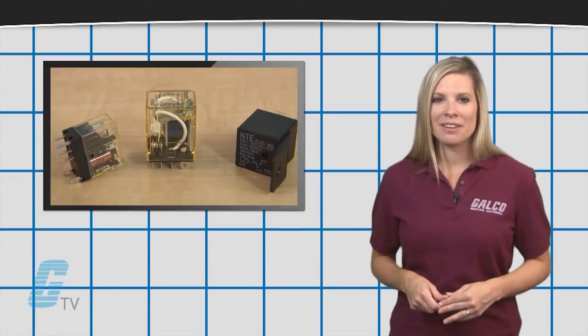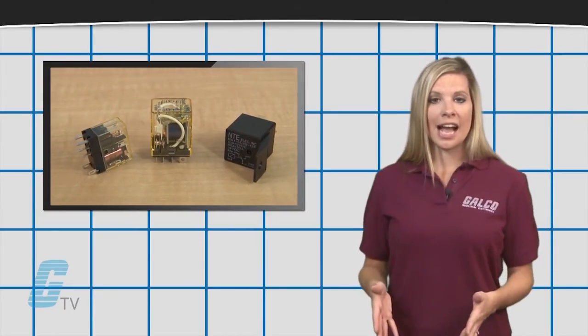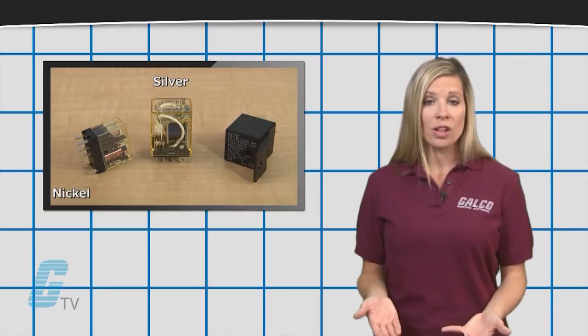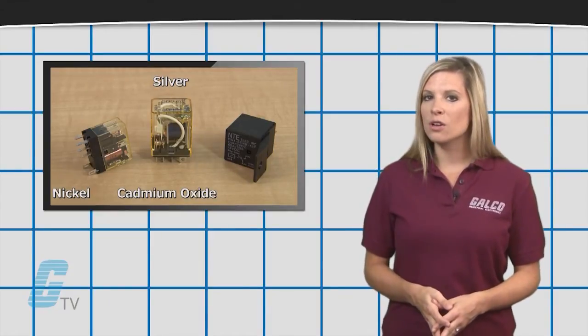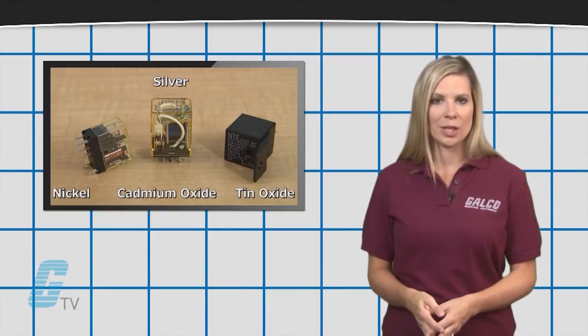For applications between 5 to 30 amps, relay contacts made of silver nickel, silver cadmium oxide, or silver tin oxide are widely used.